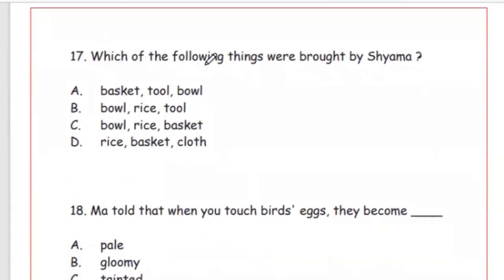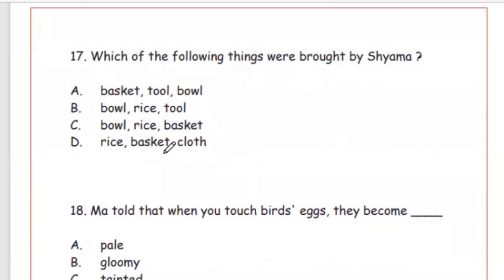Question 17: Which of the following things were brought by Shiyama? Option A: basket, tool, bowl. Option B: bowl, rice, tool. Option C: bowl, rice, basket. Option D: rice, basket, cloth. The right answer is Option D — rice, basket, and cloth. These three things were brought by Shiyama.